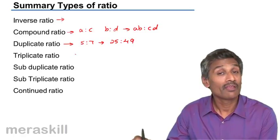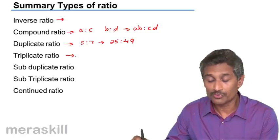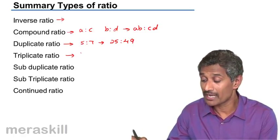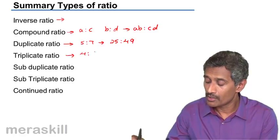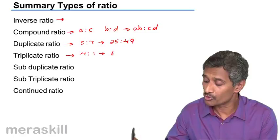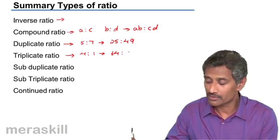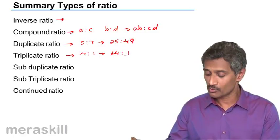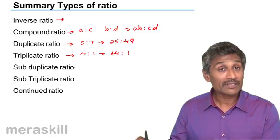Triplicate ratio is the cube ratio. So suppose you have a ratio 4 is to 1, its triplicate ratio is 4 cube, 64 is to 1 cube, which remains the same, 64 is to 1.